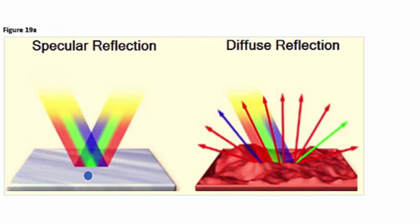It occurs with mirrors and other shiny surfaces because surface imperfections are smaller than the wavelength of the incident light. Therefore, virtually all of the light is reflected equally.